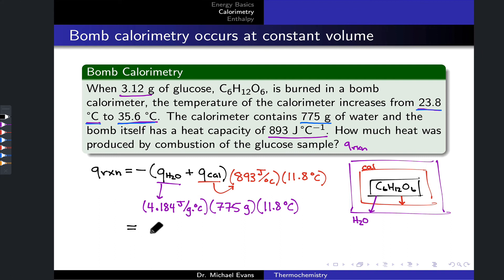The final result that we end up with here is that Q of reaction is specifically negative 48,800 joules, or if we just push the negative sign through and convert to kilojoules, negative 48.8 kilojoules for the combustion of this 3.12 gram sample of glucose.